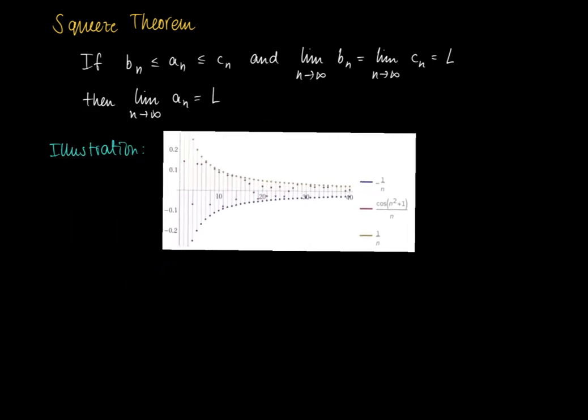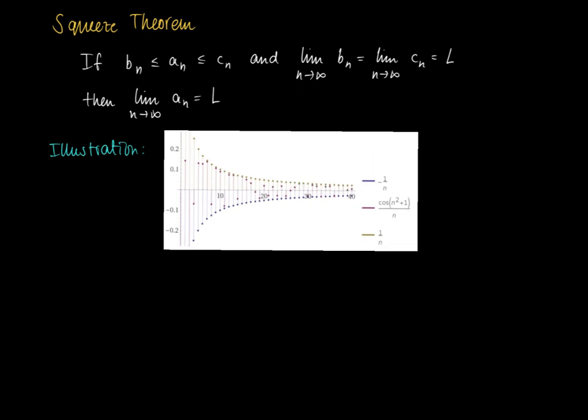For instance, here we have a sequence of cosines of n squared plus 1 divided by n. Typically, we don't know any formula to calculate the limit of such a sequence. But we know that the cosine is always smaller than 1, and the cosine is also larger than minus 1.